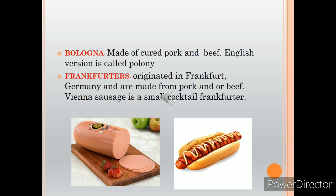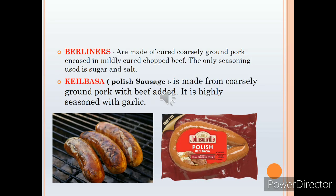Bologna is made from pork and beef, and the English type of this sausage is called polony. Then frankfurters — all of you are very much familiar with this sausage — it was originated in Frankfurt, Germany, and is made from pork or beef. Vienna sausage is a small cocktail frankfurter, and frankfurters are generally used for making sandwiches. Berliner is made from cured, coarsely ground pork and beef, and the only seasoning added is sugar and salt. Kielbasa is a Polish sausage made from pork and beef, highly seasoned with garlic added, giving it a distinct garlic flavor.